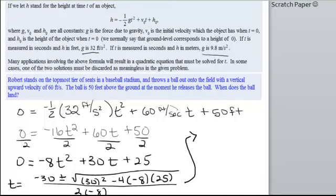And that's all over 2a. Let's simplify. I think I'm going to run out of room again. So, t is equal to negative 30 plus or minus. Let's go ahead and punch all that in the calculator. We'll have 30 squared minus 4 times negative 8 times 25. And that will give us 1700. And that's all over negative 16. Okay, does it want us to round to anything? It doesn't tell us. So, let's just see what we get.